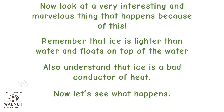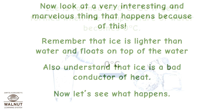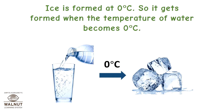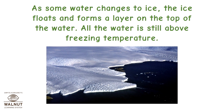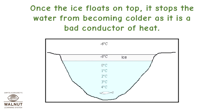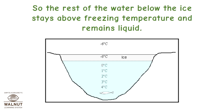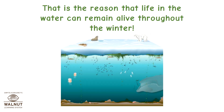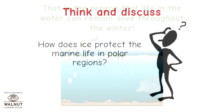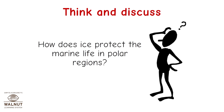Ice is a bad conductor of heat. Ice is formed at 0°C, so it gets formed when the temperature of water reaches 0°C. As some water changes to ice, the ice floats and forms a layer on top — all the water below is still above freezing temperature. Once the ice floats on top, it stops the water from becoming colder, as it is a bad conductor of heat. So the rest of the water below the ice stays above freezing temperature and remains liquid. That is the reason life in the water can remain alive throughout the winter. Think and discuss: how does ice protect marine life in polar regions?